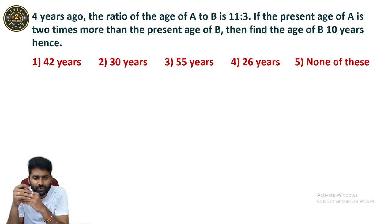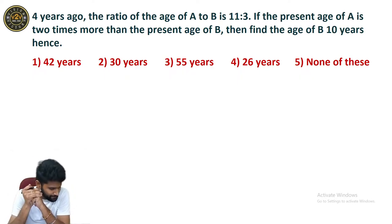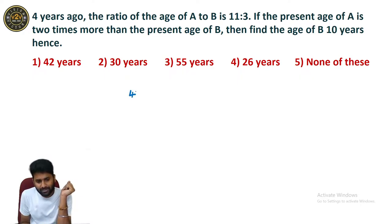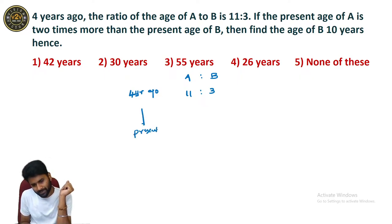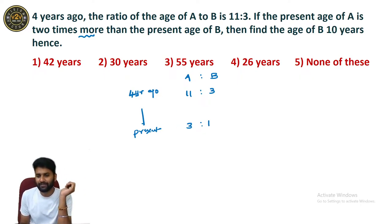See this information: 4 years ago, the ratio of ages of A to B is 11 to 23. The present age of A is 2 times more than the present age of B. You have to find the age of B 10 years hence. So 4 years ago the ratio between A and B is 11 to 23. Present age of A is 2 times more, meaning the present ratio is 3 to 24 — you have to add 2 units to B. Then find the age of B after 10 years.